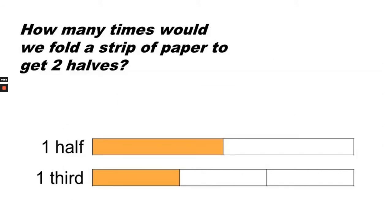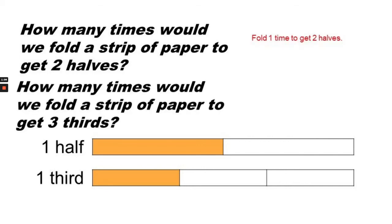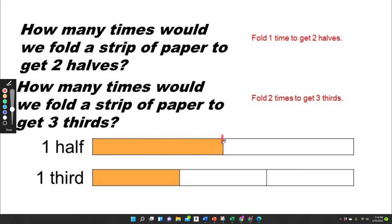How many times would we fold a strip of paper to get two halves? We would fold it one time to get two halves. How many times would we fold a strip of paper to get three thirds? Fold two times to get three thirds. Think of these demarcations here as the fold lines.